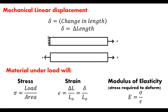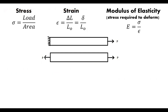This all ties back to linear displacement. So we've got our three concepts: stress, strain, and modulus of elasticity. As this load is on the end of the member, it's going through a certain amount of stress, there's a certain amount of strain taking place, and we've got a modulus of elasticity which is a function of that material. Now, if you're designing something, there are certain things you're going to know and certain things you're trying to find out.